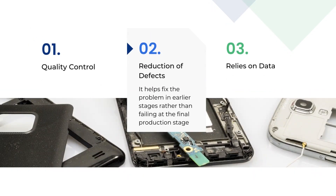The second advantage is reduction of defects. Defects, errors, flaws, faults, and failures are considered exceptions from the customer end. The reduction of defects achieved is 3.4 per million products produced. It helps fix problems in earlier stages rather than failing at the final production stage. It helps in reducing costs initially after identifying and fixing the problems. Time and costs are heavily reduced in the production stage since rework is reduced.